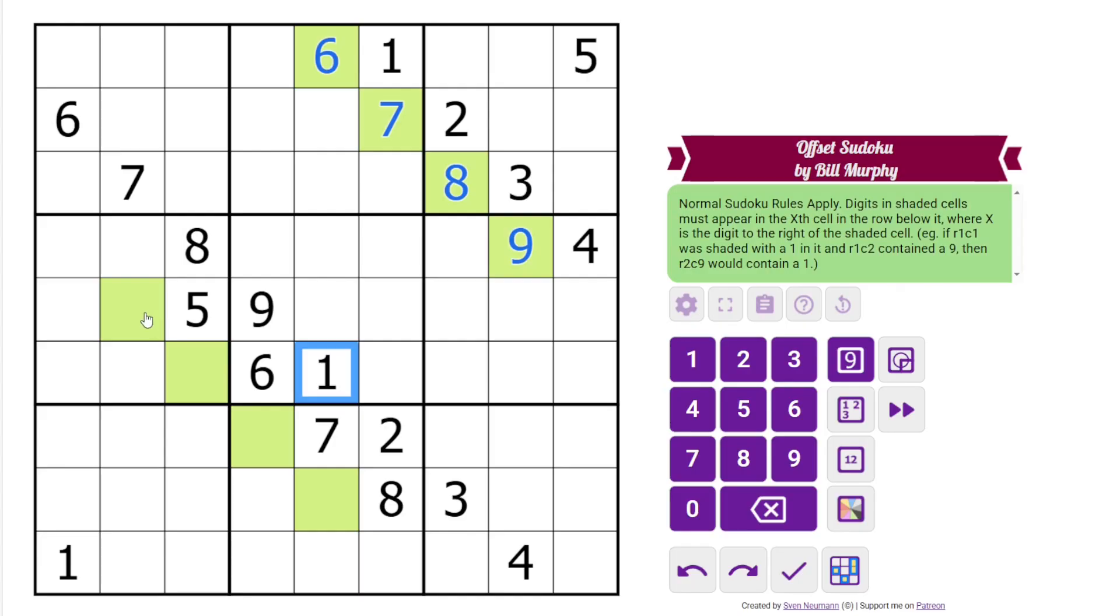Here we need the fifth cell, which is a 1. The sixth cell, which is a 2. The seventh cell is a 3, and the eighth cell is a 4. So we've already completed all the clues.